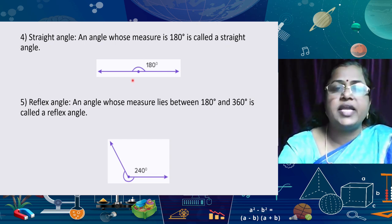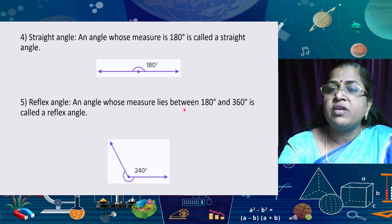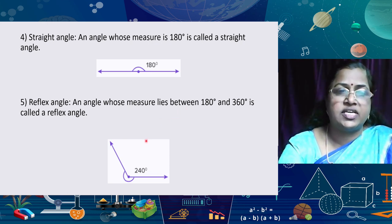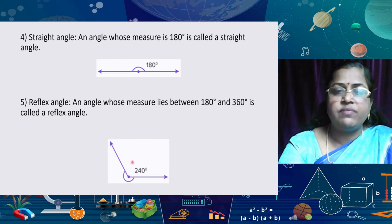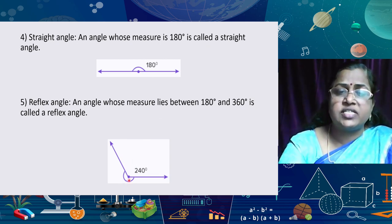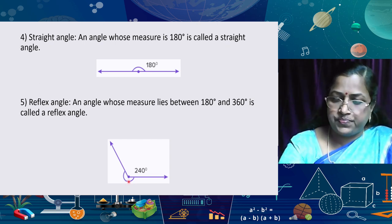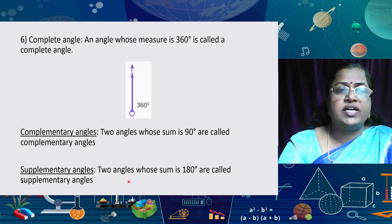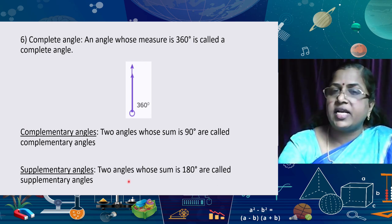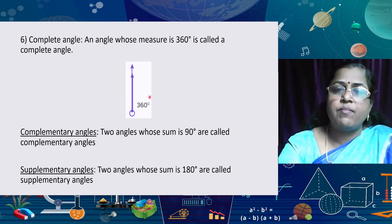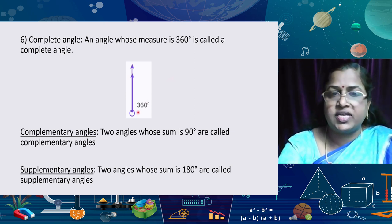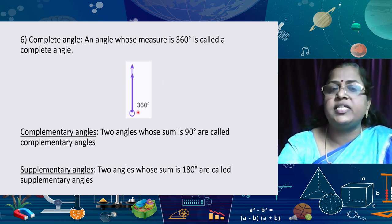Reflex angle: an angle whose measure lies between 180 degrees and 360 degrees is called a reflex angle. Here one angle is given — this is the reflex angle and its measure is 240 degrees. Another one is the complete angle: an angle whose measure is 360 degrees is called a complete angle. The angle around a point is 360 degrees.